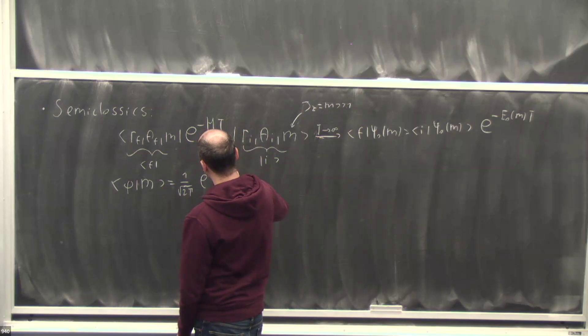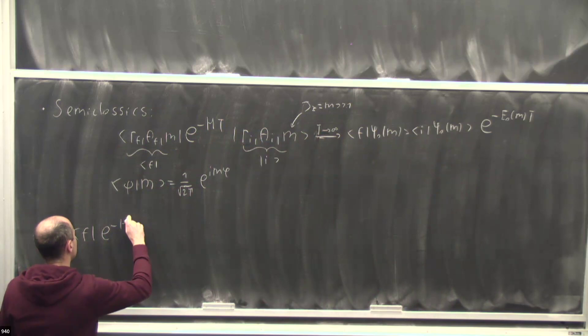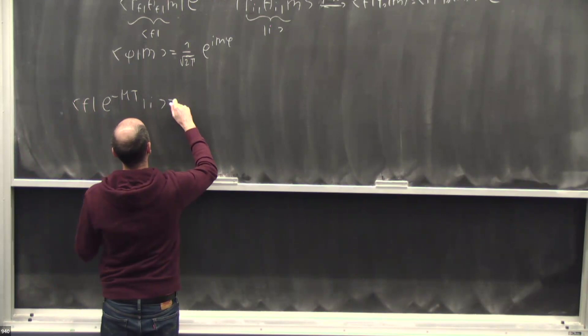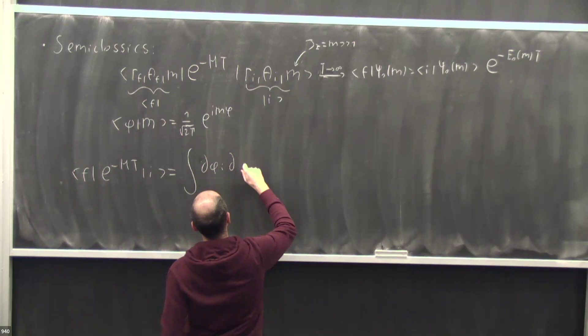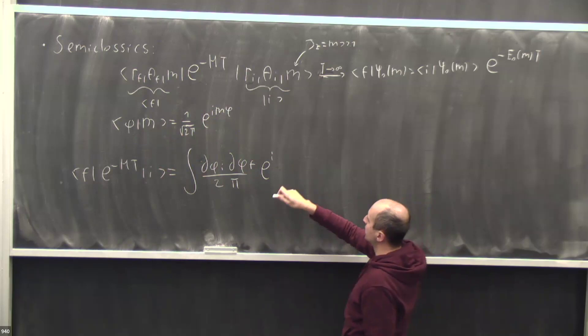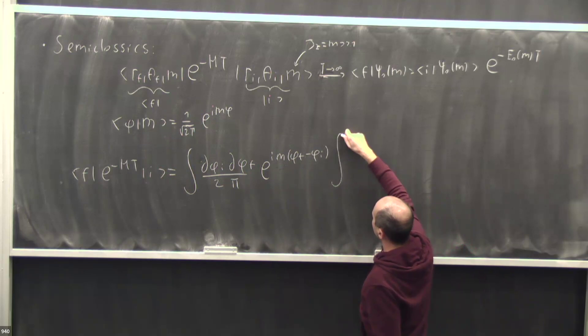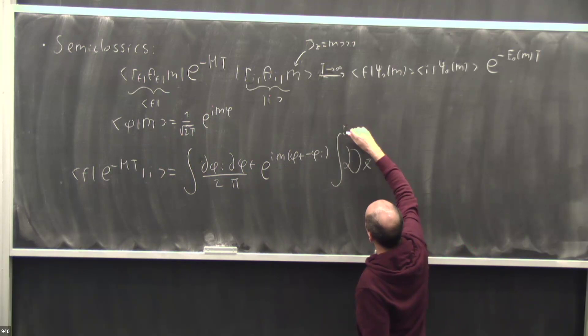The wave function in terms of the phi angle for a fixed j_z state is just one over square root of two pi times e to the i m phi. So I get the wave function of the initial and final state, I get e to the i m (phi_i minus phi_f), and then the rest is the path integral with fixed boundary conditions.